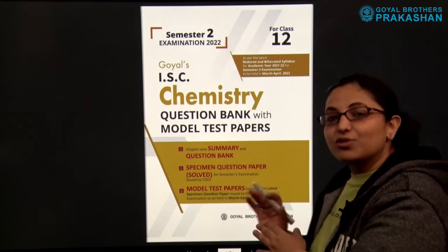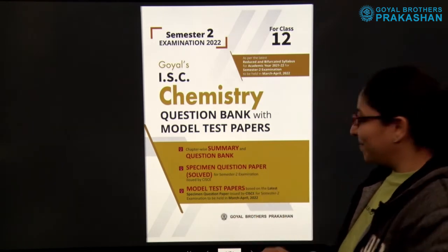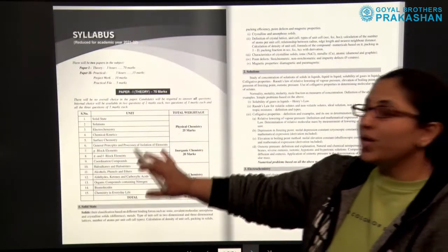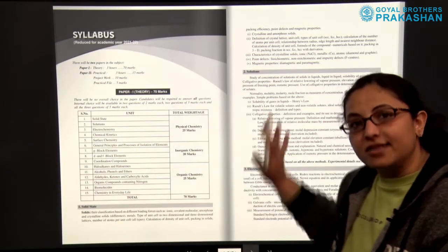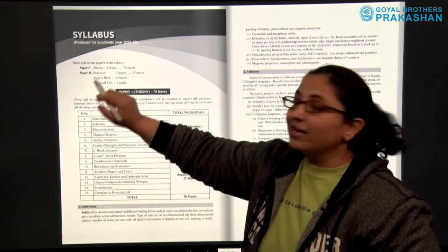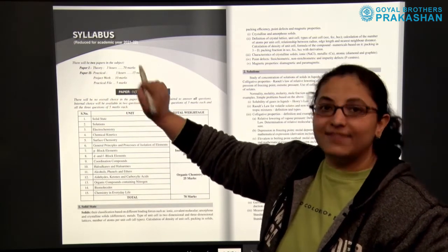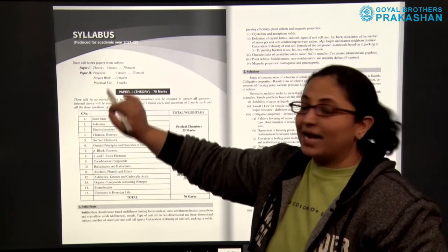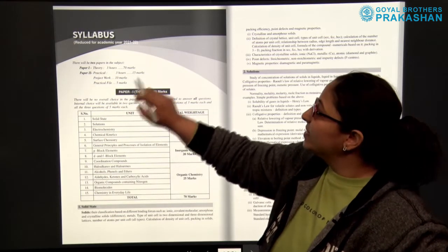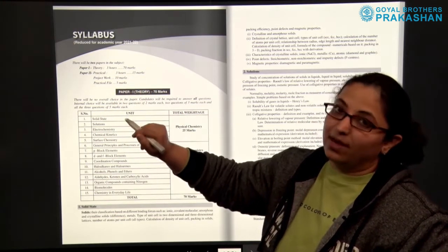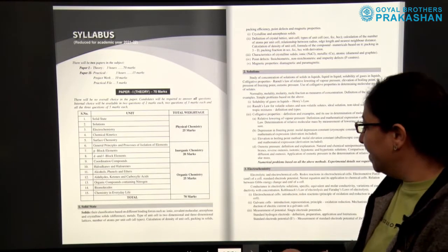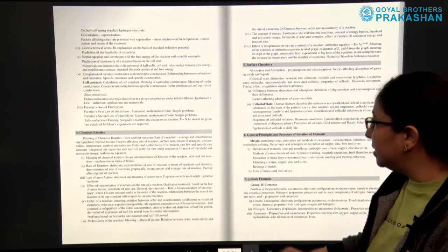Now let us go through the book and see how it has been designed. To start with, we have the syllabus at the beginning. There are two different papers. Paper 1 is theory, which is for 3 hours and 70 marks. Paper 2 is practical, project work, and practical file, and this is the syllabus for paper 1 which is theory.